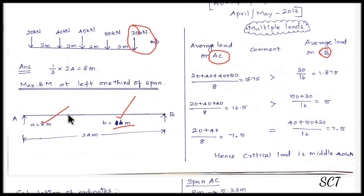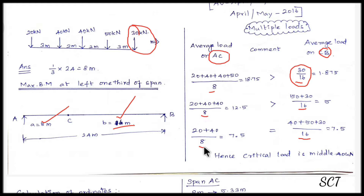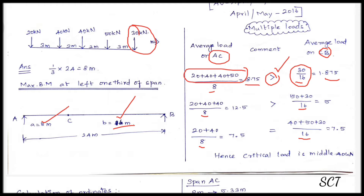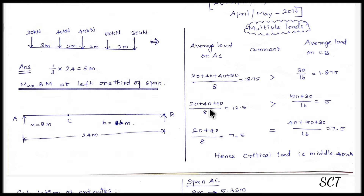We move a load to the C point. Using the average load method, we compare the load values in span AC and span CB. We add the loads: first add 24, then 15 plus 30, to compare the values in span AC and span CB.